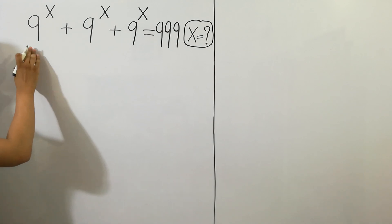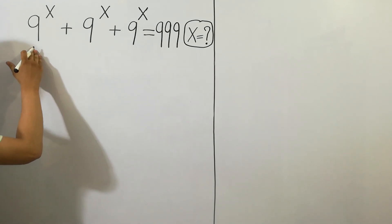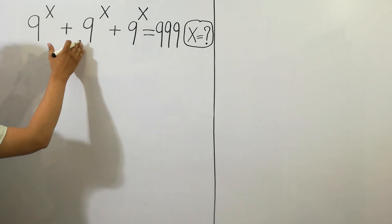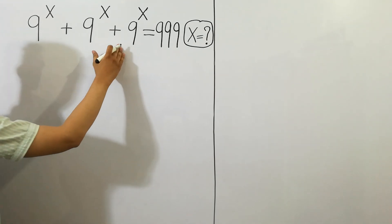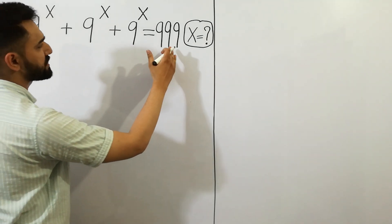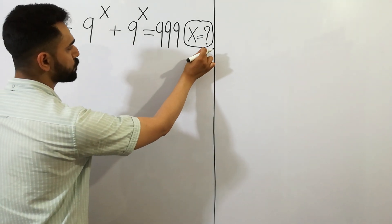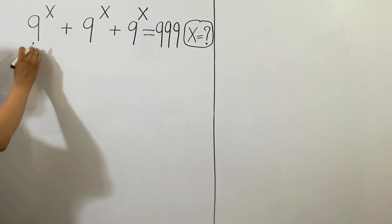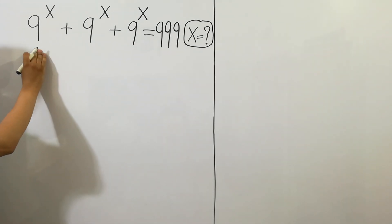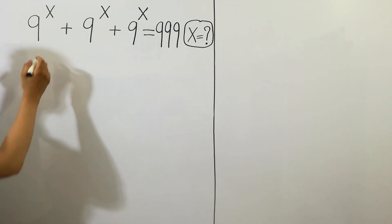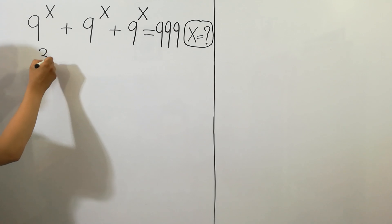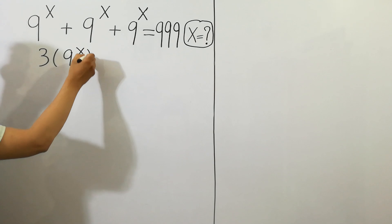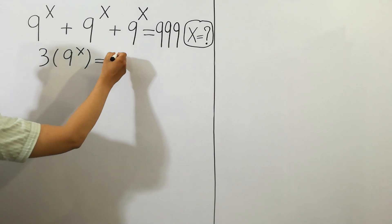Hey guys, we have a nice exponent problem: 9 to the power x plus 9 to the power x plus 9 to the power x is equal to 999. Since 9 to the power x is repeated 3 times, we can write 3 times 9 to the power x is equal to 999.